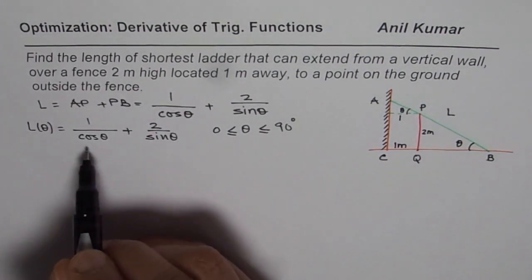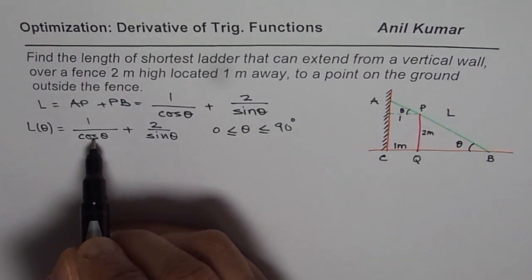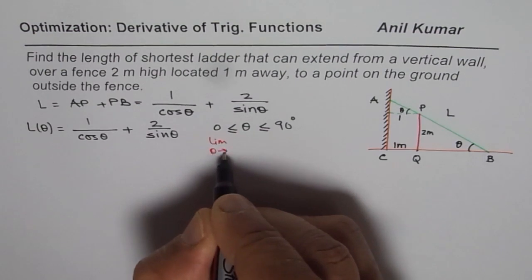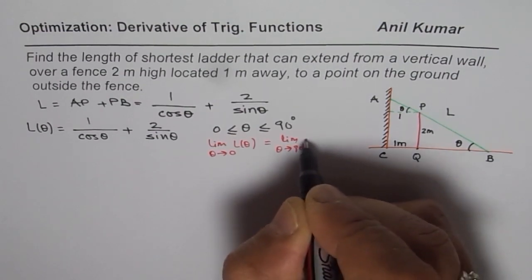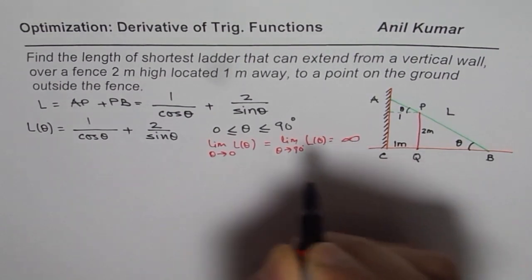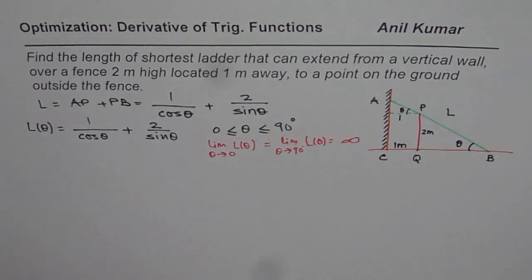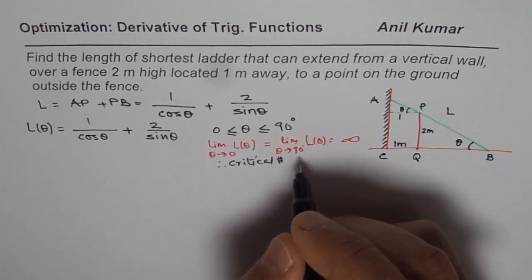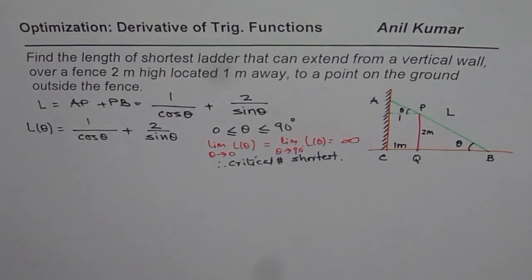If we substitute θ = 0, sine is 0, so we get infinite length. At θ = 90°, cosine is 0, so that is also infinity. The limit as theta approaches 0 and as theta approaches 90° both give infinitely large values. Therefore, the critical number will represent the shortest length of the ladder — this is a very important concept.